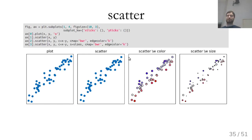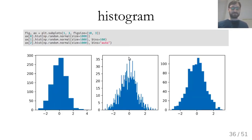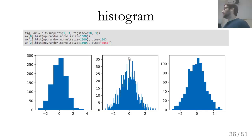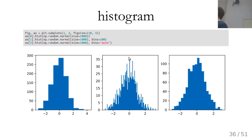Histograms: by default they have 10 bins, which is rarely the right number. You can change the number manually or use 'auto', which uses heuristics (from NumPy) to find better bins. Pandas histograms call Matplotlib which calls NumPy's histogram with the auto option. There's basically no reason to use 10 bins — auto will usually look much more reasonable.